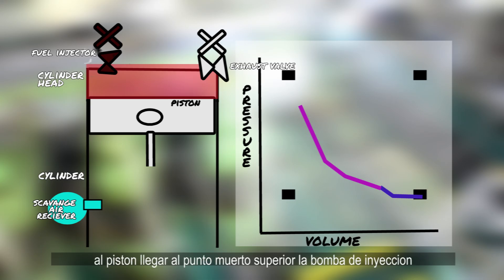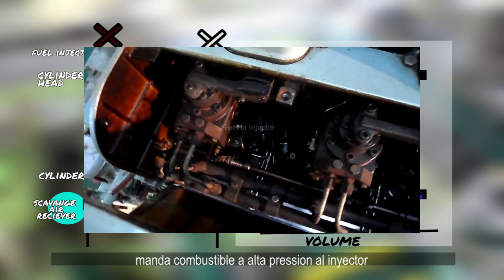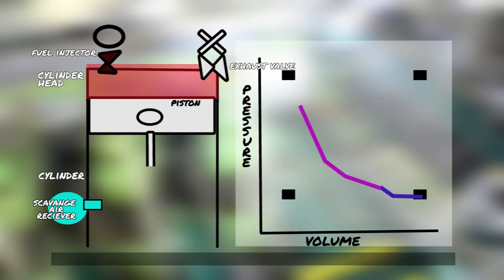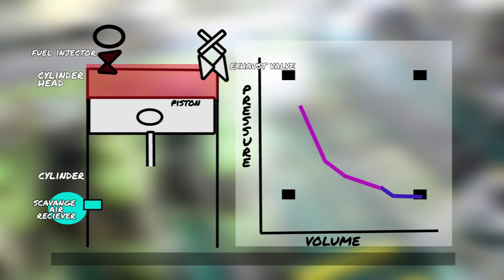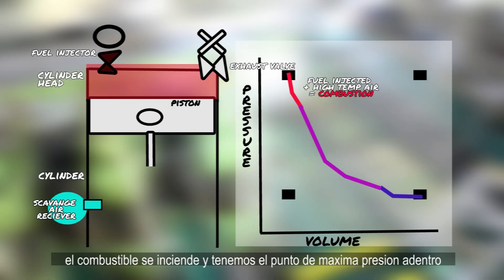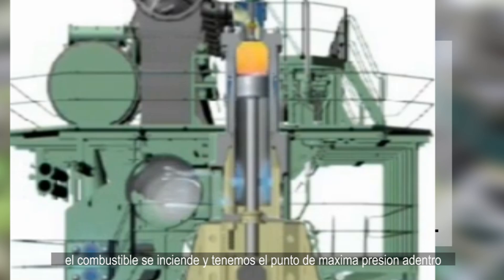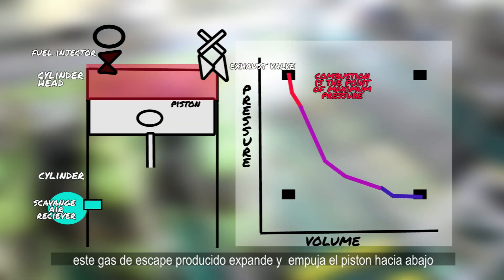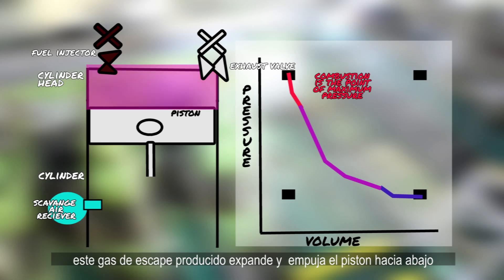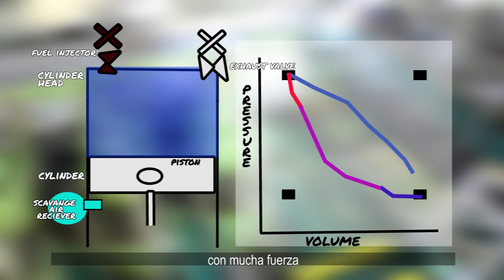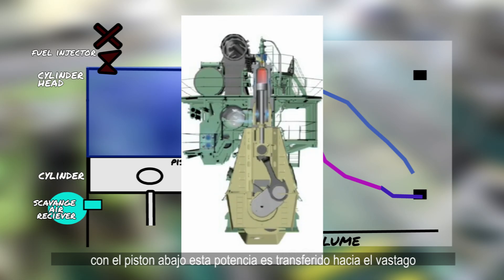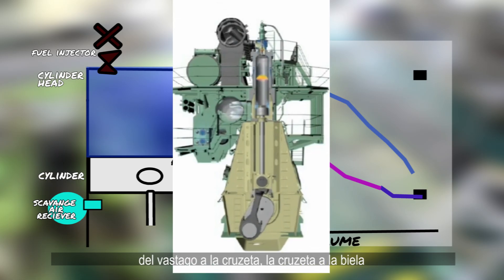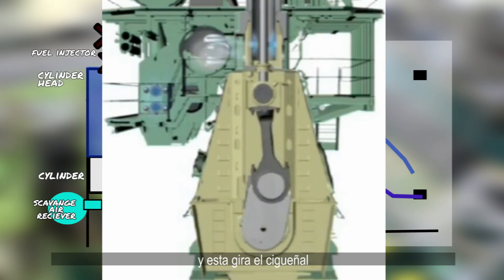At top dead center, the fuel injection pump sends high-pressure fuel to our fuel injectors, which atomize it inside our cylinder. Due to the high temperature of the compressed air, the fuel ignites. At this point, we have the maximum pressure inside the cylinder. This exhaust gas expands inside, which pushes our piston down with a lot of force. Once the piston is down, the power is transferred from the piston rod to the crosshead, which is connected to the connecting rod, and finally rotates the crankshaft.